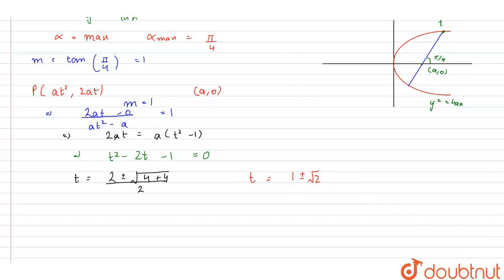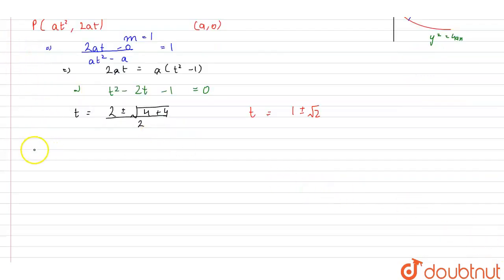Now, we know that the formula for the length of a focal chord is equal to, length is equal to, a into t plus 1 upon t whole square.